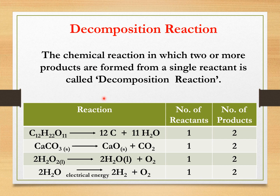Thus, here you will observe that from one single reactant, we get two or more products. So, the chemical reaction in which two or more products are formed from a single reactant is called a decomposition reaction.